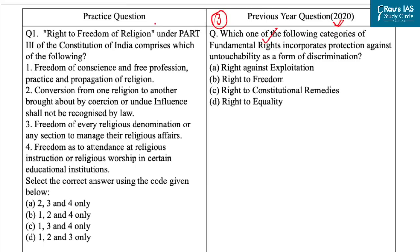Now let's come to the practice question. The question says: Right to freedom of religion under Part 3 of the Constitution of India comprises which of the following? The first option is freedom of conscience and free profession, practice and propagation of religion.